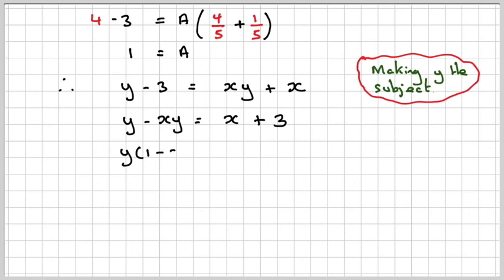Common factor here of y. So it becomes y(1 - x) = x + 3. Finally we get that y = (x + 3)/(1 - x), which is y equal to some function of x.